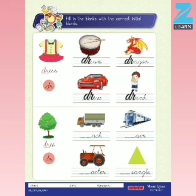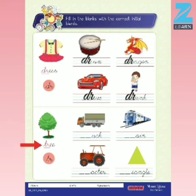Now, children, tell me what image is this? Yes, that is a tree. And what is the initial blend in the word tree? Yes, it is TR.